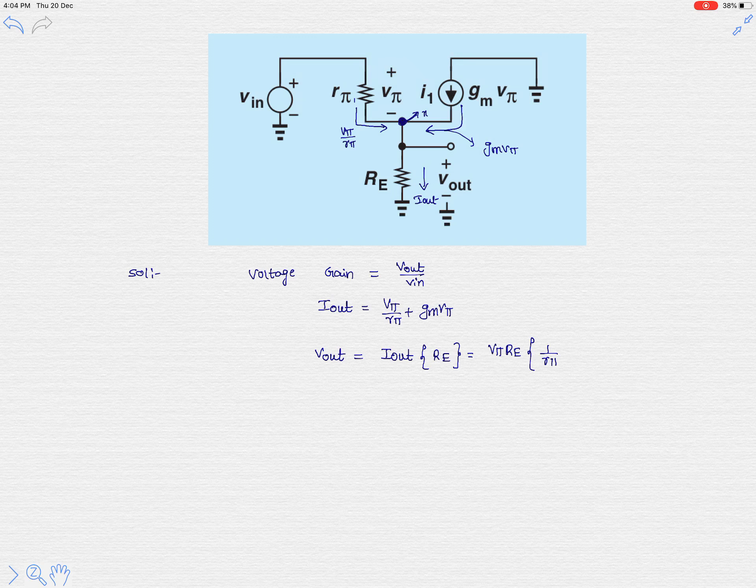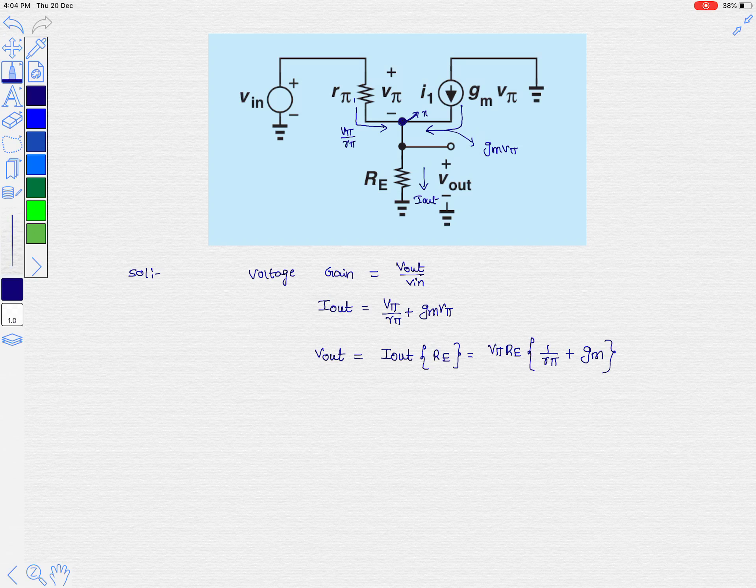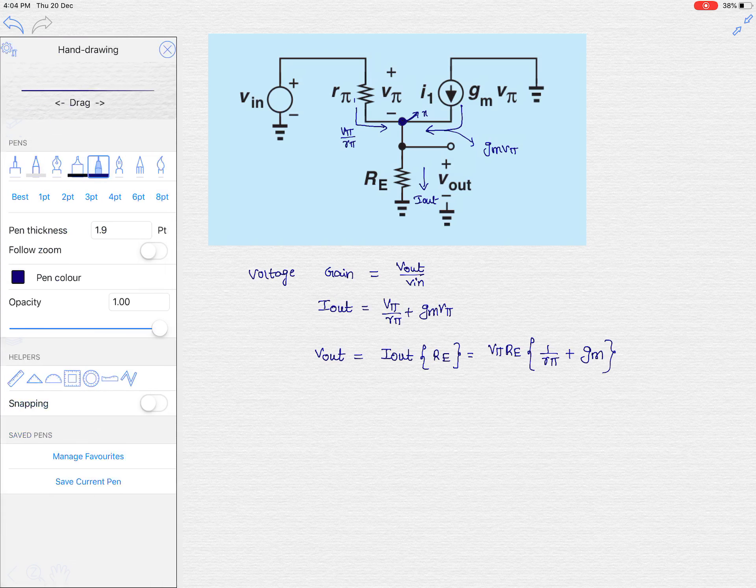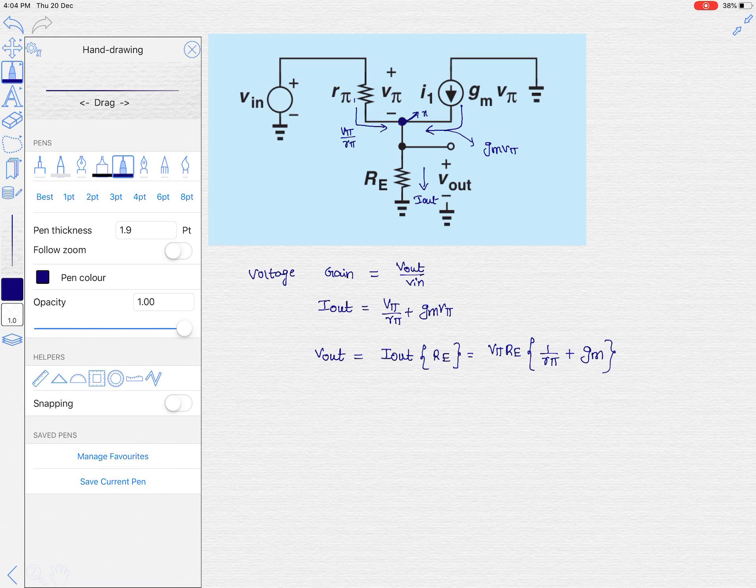It is clear that output voltage v_out is i_out multiplied with r_E, so the output voltage is v_π r_E. Let's take these two terms outside, so then it is 1 over r_π plus gm.